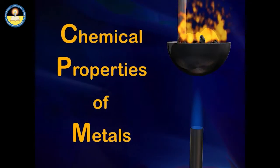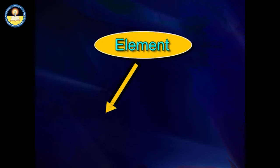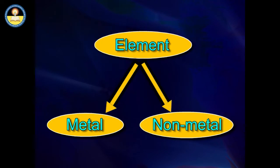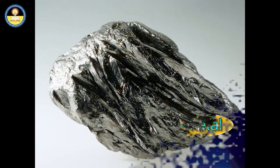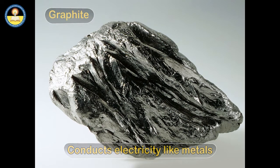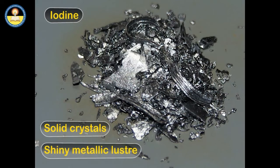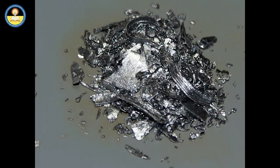Chemical Properties of Metals. Sometimes physical properties may not give an indication whether an element is a metal or a non-metal. For example, graphite is a non-metal but conducts electricity like metals. Iodine is a non-metal but exists as solid crystals having a shiny metallic luster. So, classification of elements on the basis of chemical properties is more accurate.